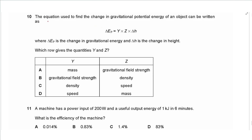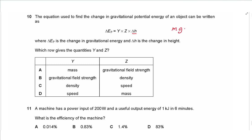Question 10: the change in gravitational potential energy is expressed as Y × Z × ΔH. The equation for ΔE_P is mGΔH, where m is mass and G is gravitational field strength. So the answer is A.